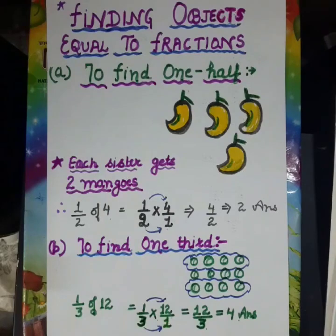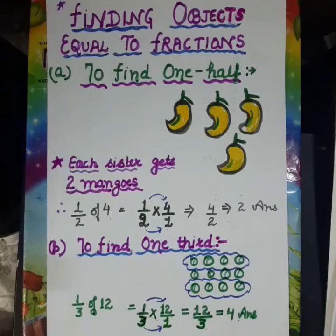First we will learn how to find one half. As you see, here are four mangoes. These mangoes are divided equally between two sisters. Each sister gets half of the total. So, how many does each of them get? We will find this.